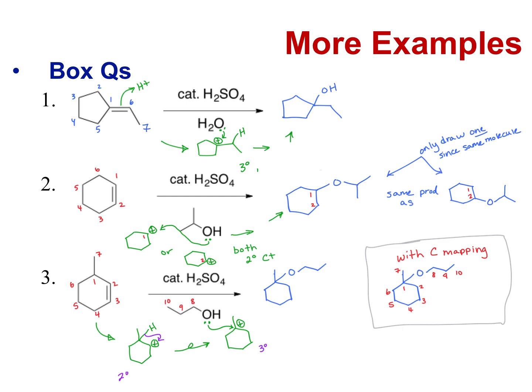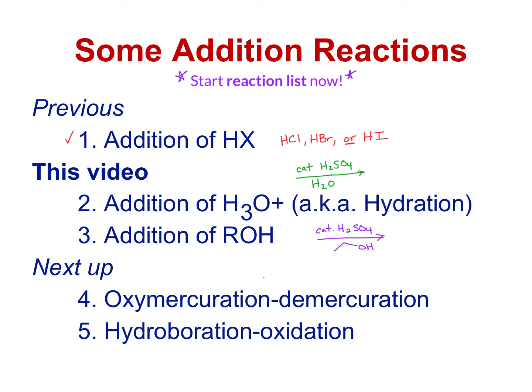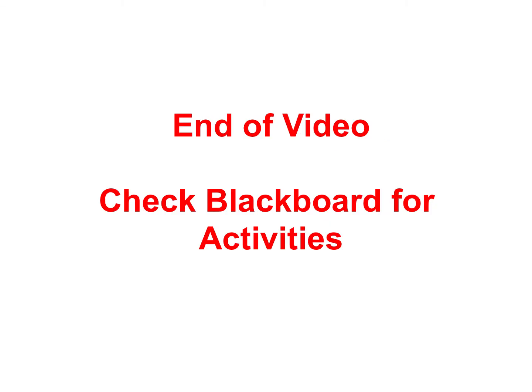Hopefully that makes sense. If you have questions, you can always email me or talk to me in class. Just a reminder of where we're at in this section: it's a short section, and we want to make sure we're keeping up with our reaction list. You should have three reactions so far — the addition of HX (HCl or HBr), the addition of H3O+ which is the same as H2SO4 and water, and the addition of alcohol to double bonds. Then the next class will cover two more reactions that are a little more complicated, so make sure you've read ahead for those. Check the activities and let me know if you have any questions.